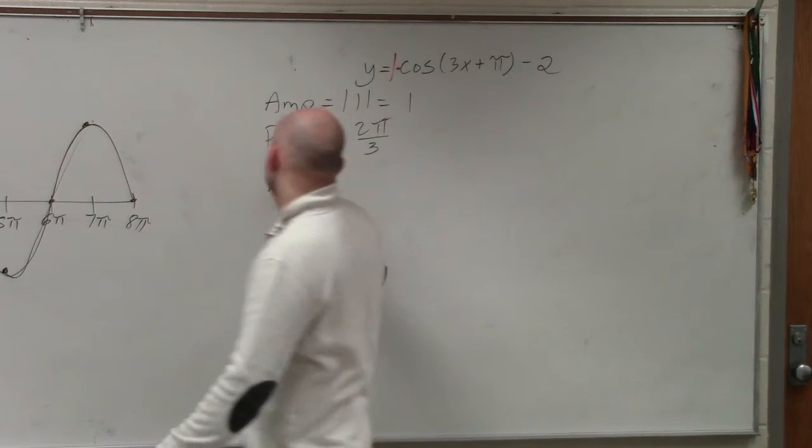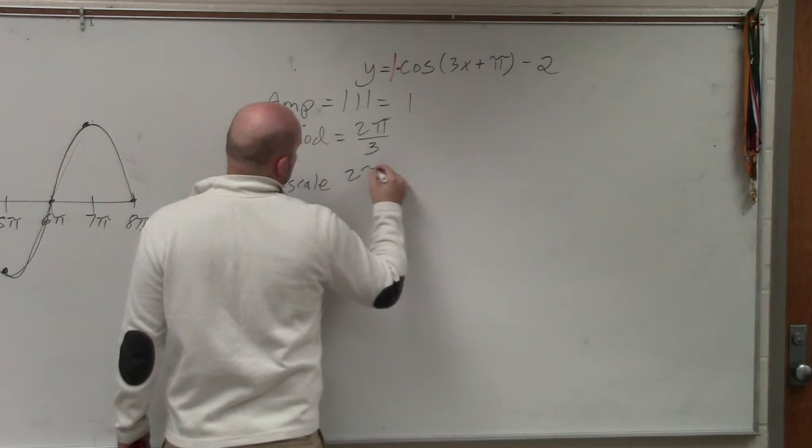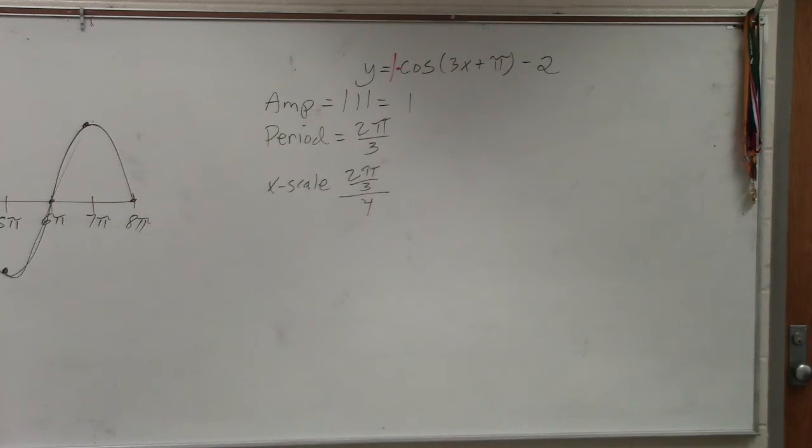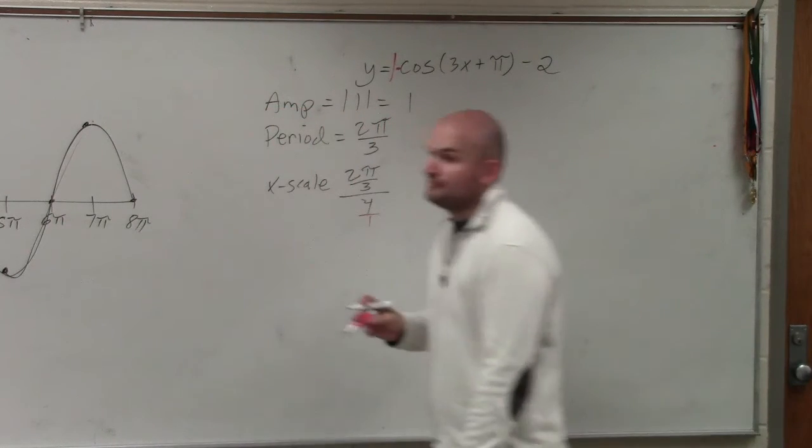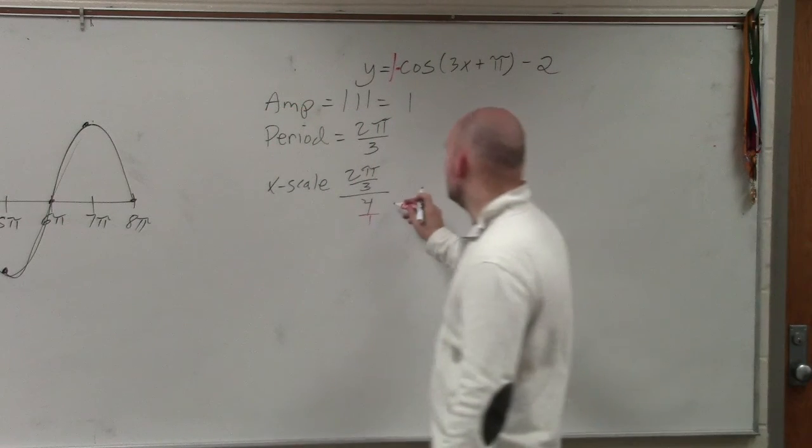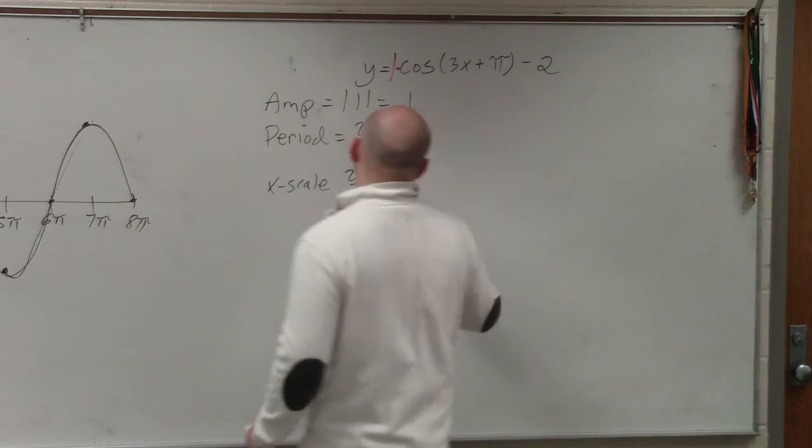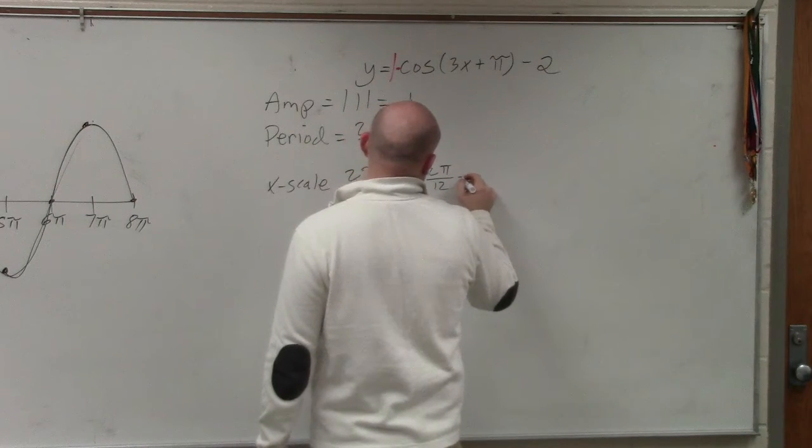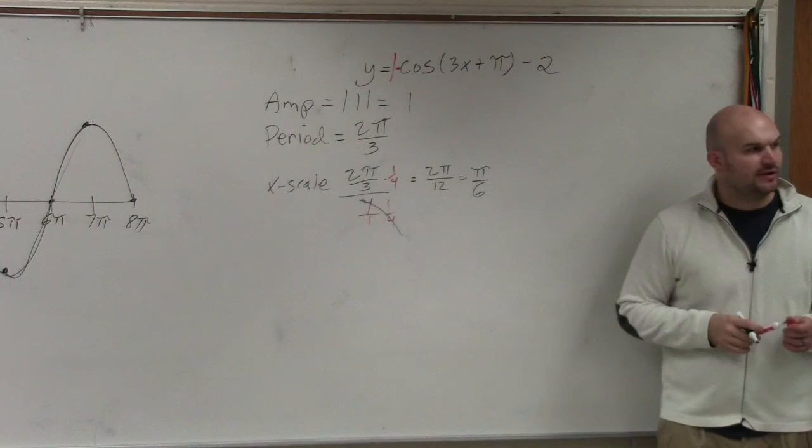Our x scale is going to be period, so 2π divided by 3 divided by 4. A lot of students get stuck with this. Again, just remember to take your 4, divide it by 1. So if you have a fraction divided by another fraction, multiply it by the reciprocal, so that goes to 0. So you have 2π divided by 12, which equals π over 6. Is everybody OK?